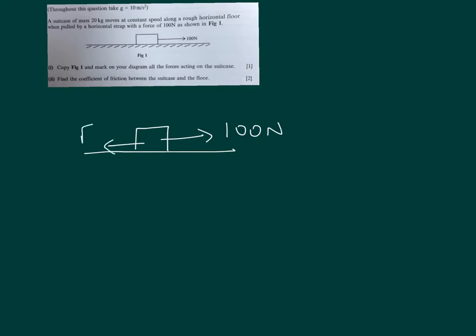So let's draw the floor and the suitcase just as the usual block. We have 100 newtons which is our forward force. The floor is rough so we'll have our friction in the opposite direction. And we have our weight — so it's 20 kilograms for the mass, therefore we have 20G acting downwards. And then we always have our normal reaction. So there are the four forces acting.